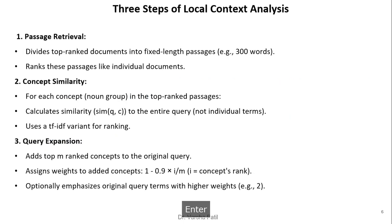The three steps of local context analysis are as follows. First, passage retrieval: divide the top-ranked documents into fixed-length passages — for example, 300 words equals one passage — and rank these passages like individual documents rather than working on entire documents. Second, concept similarity: for each concept, that is a noun group, in the top-ranked passages, calculate the similarity to the entire query using a TF-IDF variant for ranking.